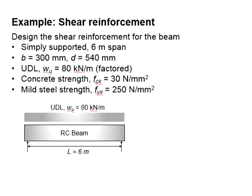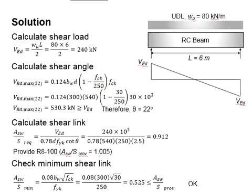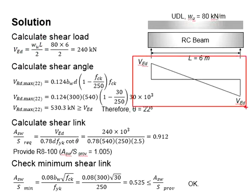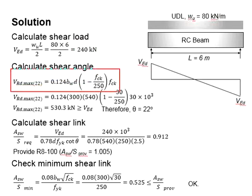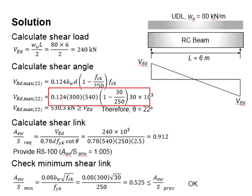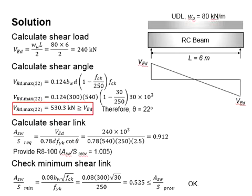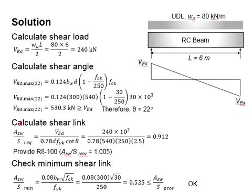To solve this problem, first you need to calculate the shear load. The shear load is obtained from the shear force diagram, which is equivalent to WL/2, the reaction force, and equals 240 kilonewton. First, you test the shear resistance at theta equals 22 degrees by substituting the relevant values into the equation. You will get a resistance of 530.3 kilonewton. Since the shear resistance is greater than the shear load, you assume theta is equal to 22 degrees.